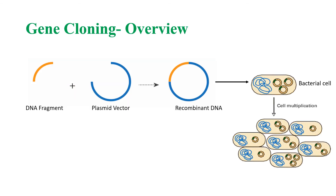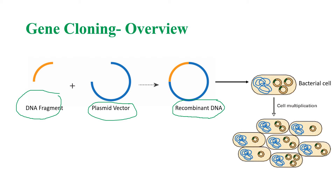Let us see an overview of gene cloning. The desired DNA fragment is inserted into the plasmid vector to form recombinant DNA. The recombinant DNA is then inserted into a bacterial cell, where the DNA will be multiplied as the cell divides.